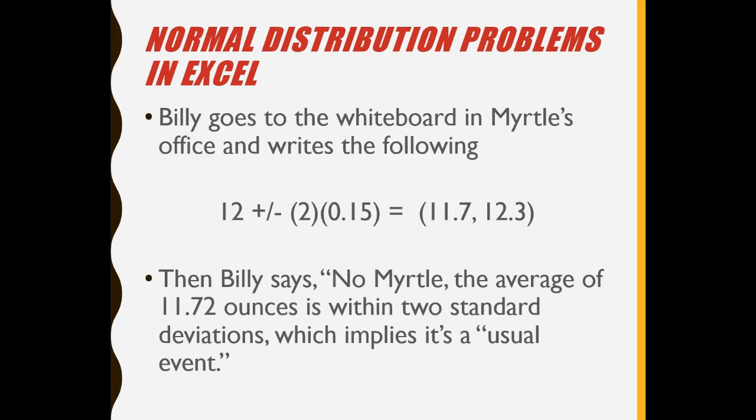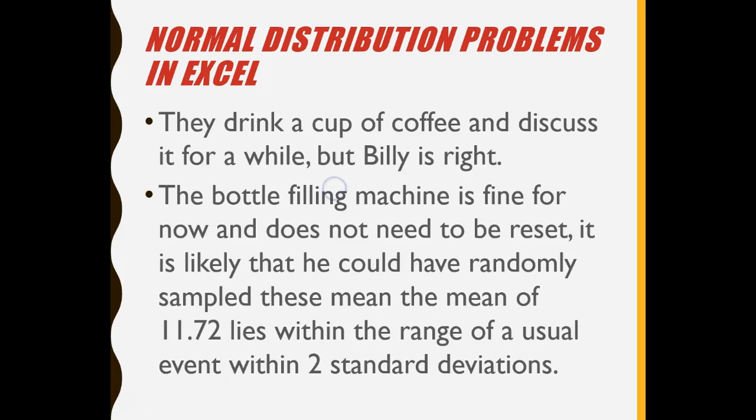Billy goes into Myrtle's office up to the whiteboard and he writes the following. He says 12 plus or minus 2 times 0.15 equals 11.7 to 12.3. In other words, 12 minus 2 times 0.15 is 12 minus 0.3 is 11.7. 12 plus 2 times 0.15 is 12 plus 0.3 or 12.3. Then Billy says, no Myrtle, the average of 11.72 ounces is within that range. It's within two standard deviations, which implies it's a usual event.